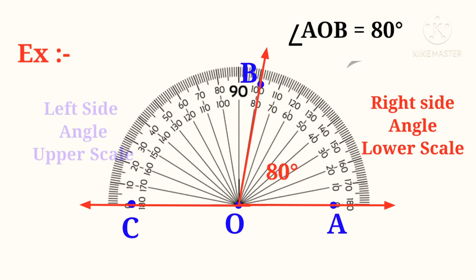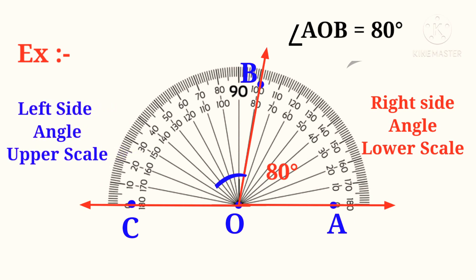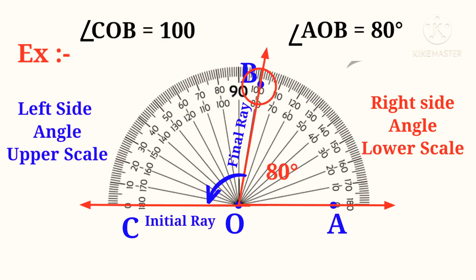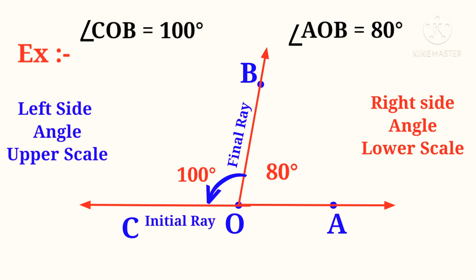Now to measure the left angle, that is angle COB, the initial ray is OC and the final ray is OB. For this, we have to use the upper scale: 0, 10, 20, and so on up to 100. The final ray OB is pointing 100 degrees. So angle COB is 100 degrees.